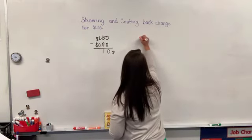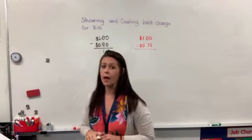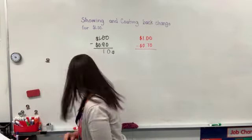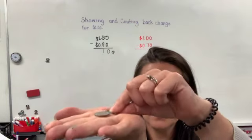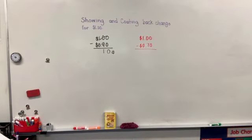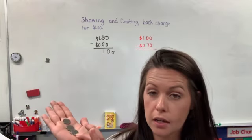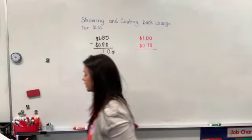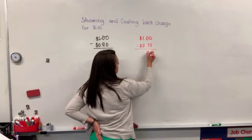I have one dollar and I'm going to spend 70 cents. I can count by tens: 70, 80, 90, and one dollar — so that's three dimes. Three dimes is worth 10, 20, 30 — so I would get 30 cents back in change. If I do the subtraction: 0 minus 0 equals 0, and 10 minus 7 equals 3, so my answer is 30 cents.